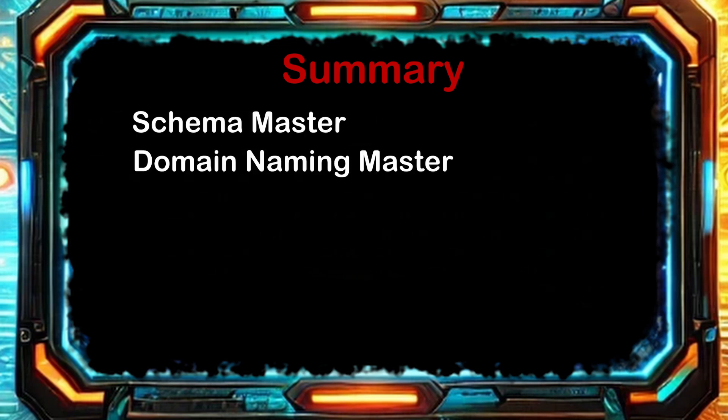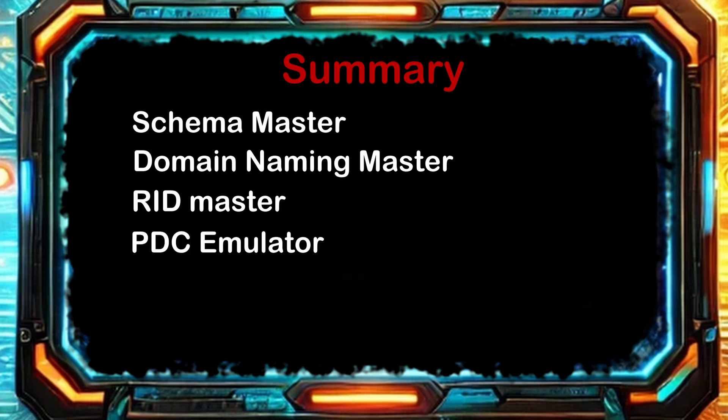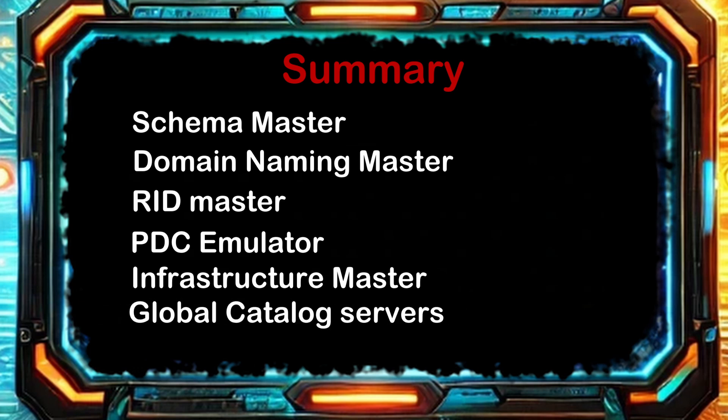In this lesson, we talked about the five Flexible Single Master Operation, or FISMO roles — the five roles so crucial that only one domain controller at either the forest level or the domain level can perform each function. We first talked about the Schema Master and the Domain Naming Master, which are both at the forest level. Then we talked about the RID Master, the PDC Emulator, and the Infrastructure Master, which are all at the domain level. We also touched on how Global Catalog servers work and how the Infrastructure Master works with the Global Catalog.